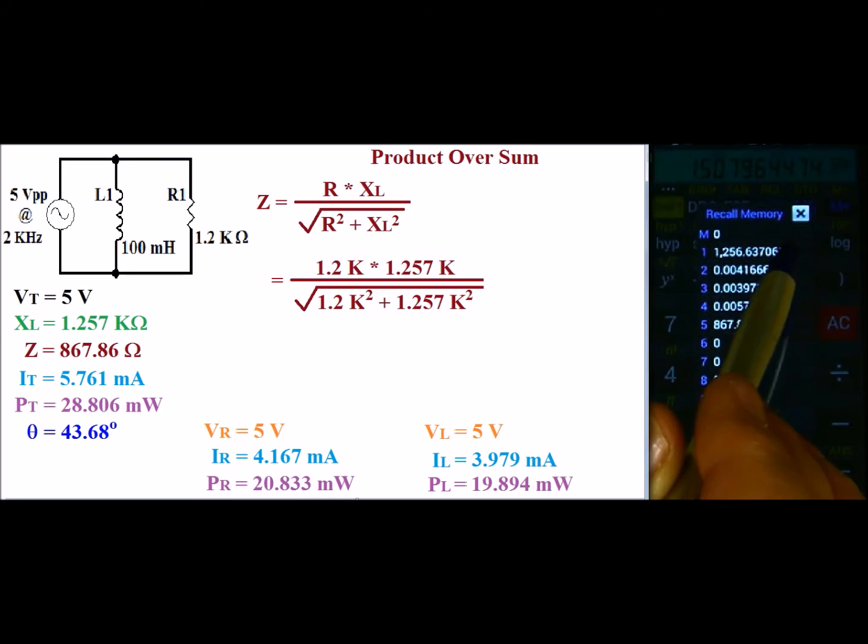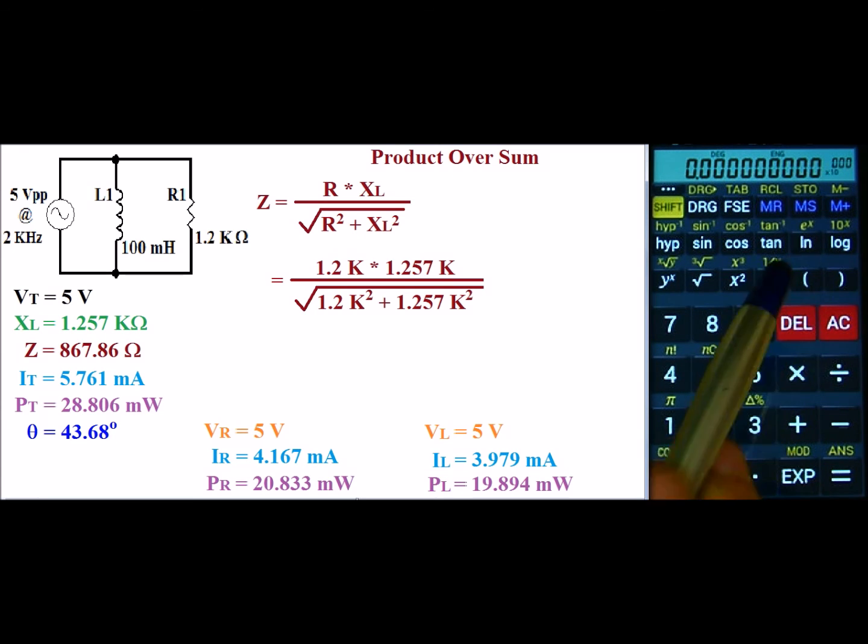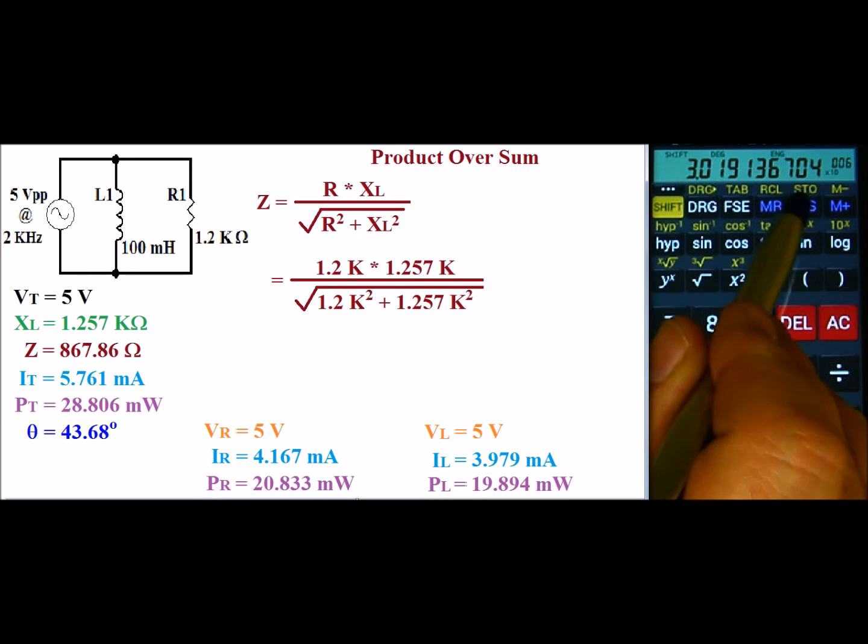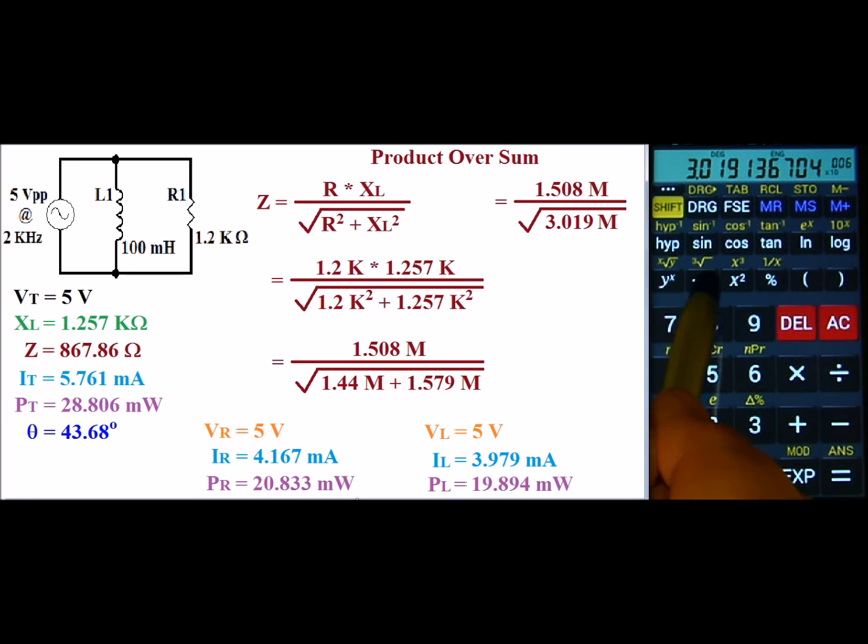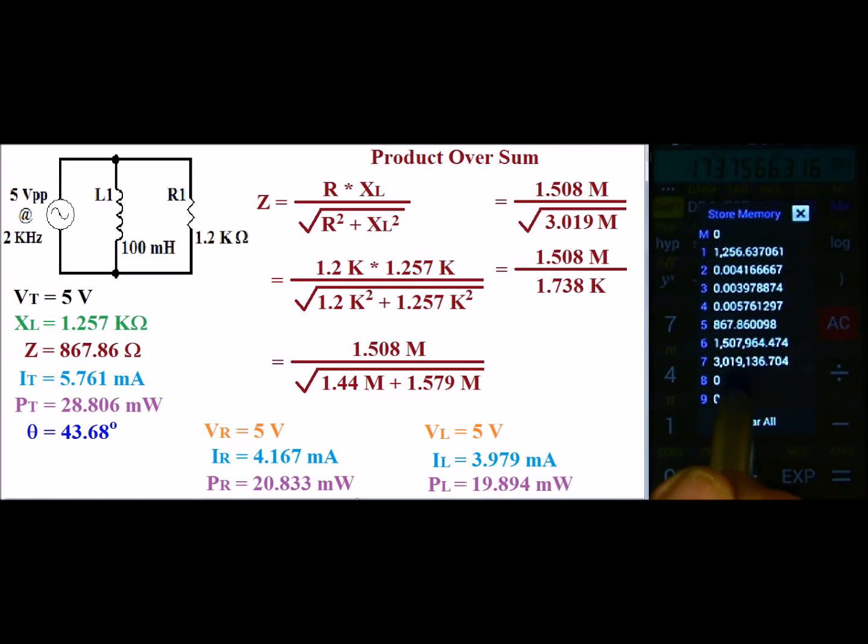And now what we're going to go ahead and do is the bottom part. 1.2 exponent 3 squared plus the recall of our inductive reactance squared equals. And then we're going to go ahead and store this underneath there. Now remember we did not square root this bottom number. So I'm going to go ahead and square root it and store that value.